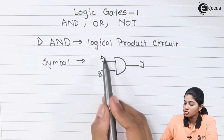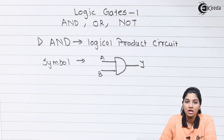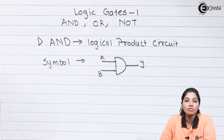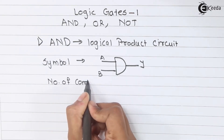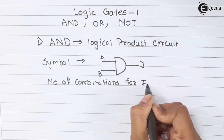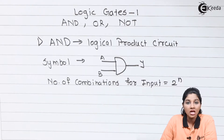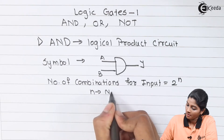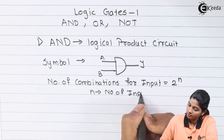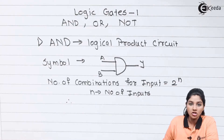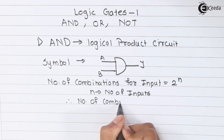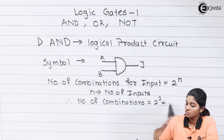In the symbol, the AND gate has two inputs A and B and one output Y. The gate can have N number of inputs but the output remains one only. Depending upon the number of inputs, the number of combinations for a truth table can be calculated using a formula. As inputs are 2, the number of combinations becomes 2 raised to 2, that is 4.